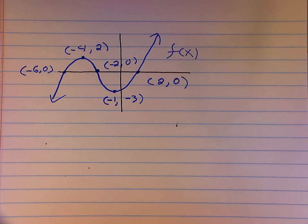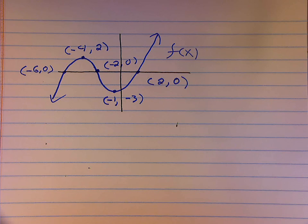The important thing to remember when talking about concavity is that concavity is very different from describing the rate of change — whether the function is increasing or decreasing. When we are talking about concavity, what we are talking about is: are we adding to the rate of change? Concave up. Are we removing from the rate of change? Concave down. Always as we are moving from left to right.